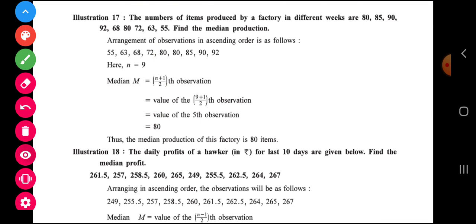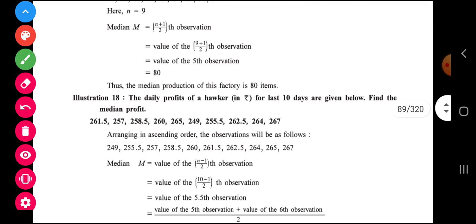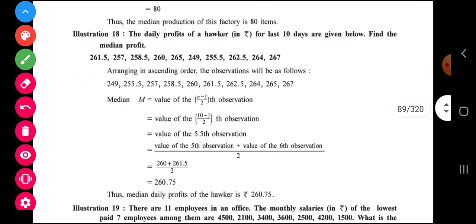Now next example. What is the change? When the number of observations are even, even 2, 4, 6, 8, 10. So how to calculate median? There is a little change. That change you all try to understand. Example 18. The daily profit of workers for last 10 days are given below. Find the median profit. Last 10 days, N is equal to 10, clearly there. If you arrange them in ascending order,